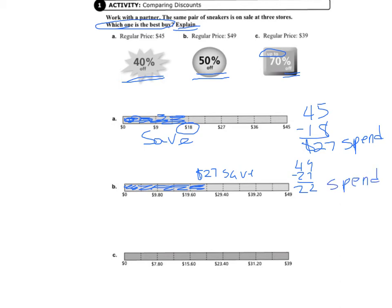So we know out of the two we've compared that Store B is the better out of those two. And then we need to look at Store C. So the regular price is $39, and we need to color in seven chunks because we would be saving up to 70%.